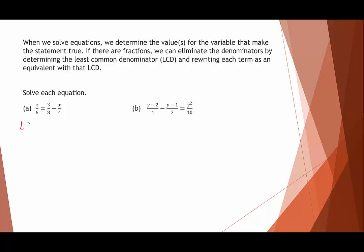The least common denominator would be 24 because that's the smallest number that 6, 8, and 4 all go into. So we want to rewrite x over 6 as something equivalent but with a denominator of 24, meaning we multiply 6 by 4, and whatever we do to the denominator we do to the numerator.